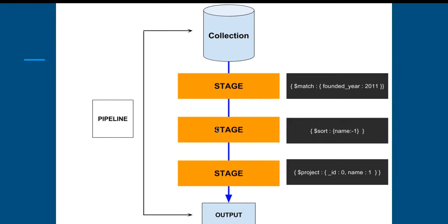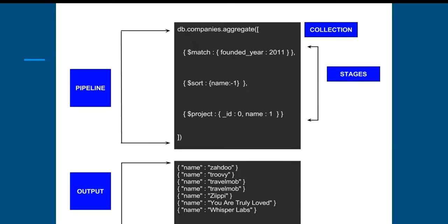Here's a more complete example with actual code. We have db.companies.aggregate, specifying the companies collection in the database and aggregating the data. Here is our pipeline with stages. As company documents come through, we match founded_year equal to 2011 — so we match all documents in this collection where founded_year equals 2011. That's the first stage.